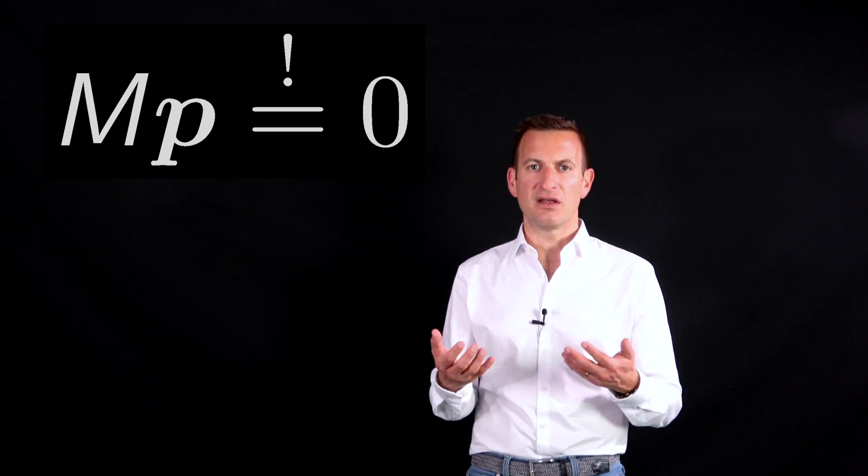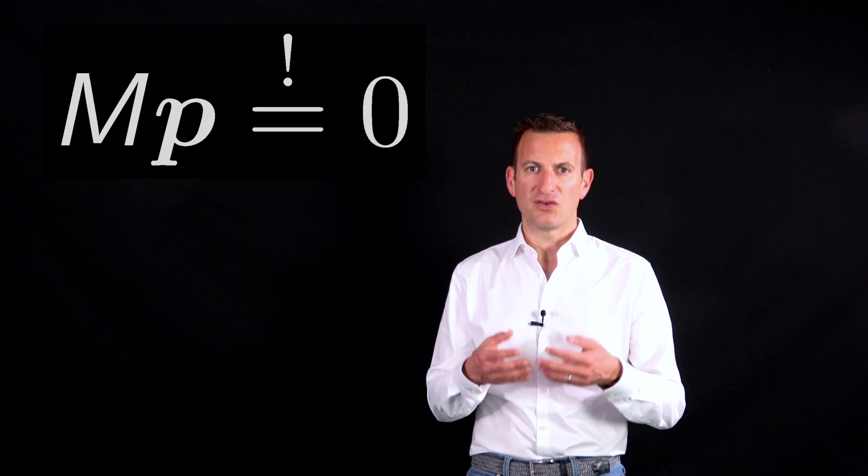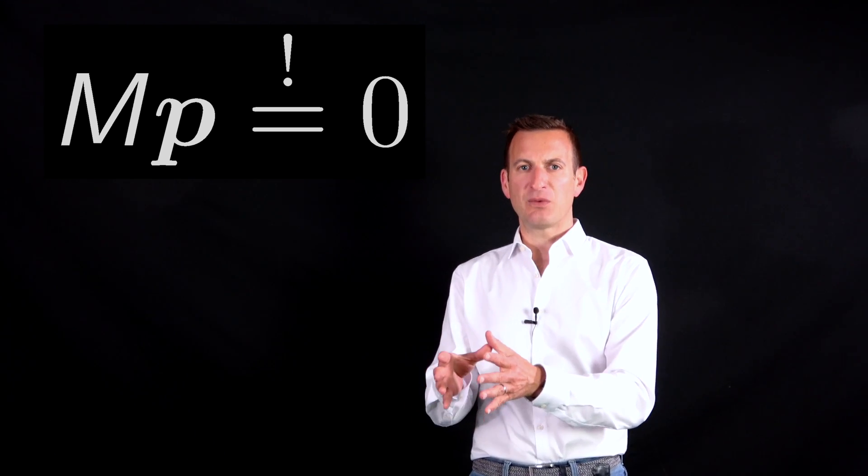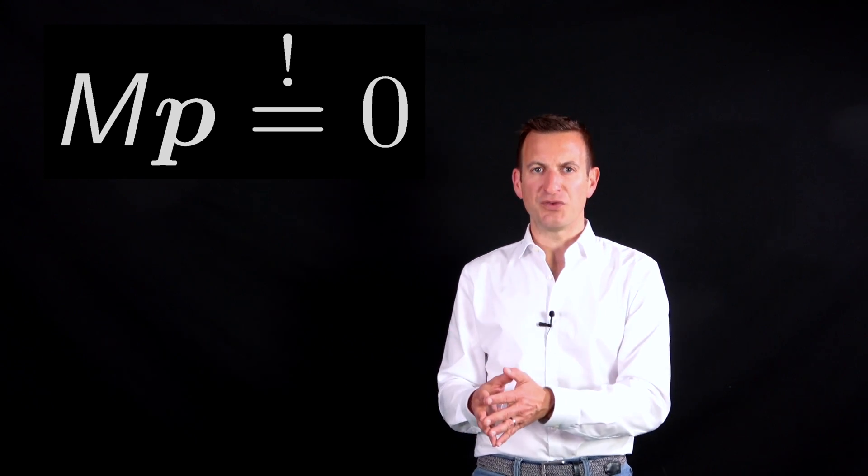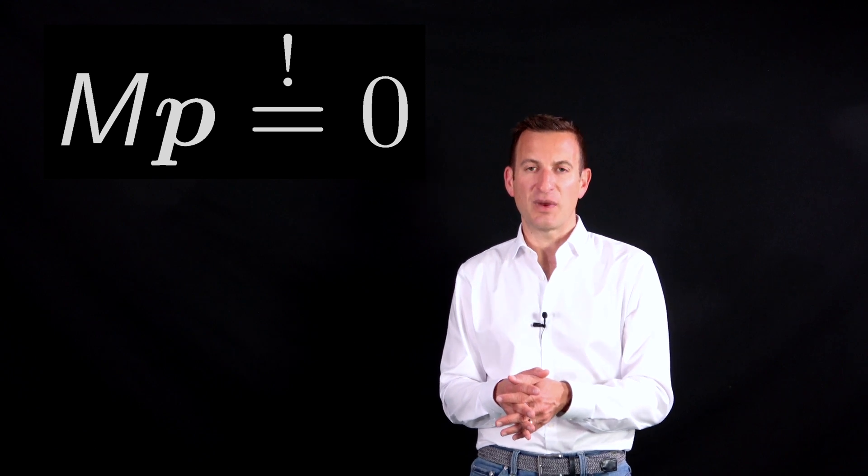So this is in the end a homogeneous linear system that we need to solve. So a matrix M, which is completely known, multiplied with the vector P consisting of unknowns must be equal to 0. How does P look like so this equation holds?